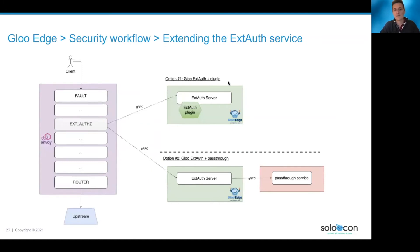There are two ways of doing that. First, you can build a Go plugin using Golang — this plugin will run alongside the ext-auth server — but the main drawback is that you will have to recompile your plugin every time you upgrade Gloo Edge Enterprise. The other way is called the pass-through system.